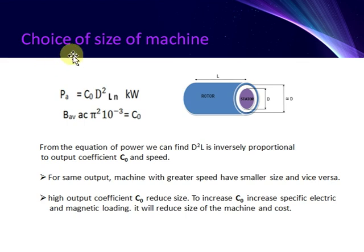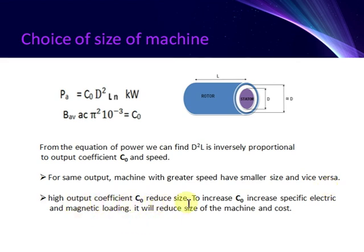Choice of size of machine: from the equation of power, we can find that D-squared times L is inversely proportional to the output coefficient C-zero and speed. For the same output, a machine with greater speed has a smaller size, and vice versa. A high output coefficient C-zero reduces size. To increase the output coefficient, increase specific electric and magnetic loading, which will reduce the size of the machine and cost.